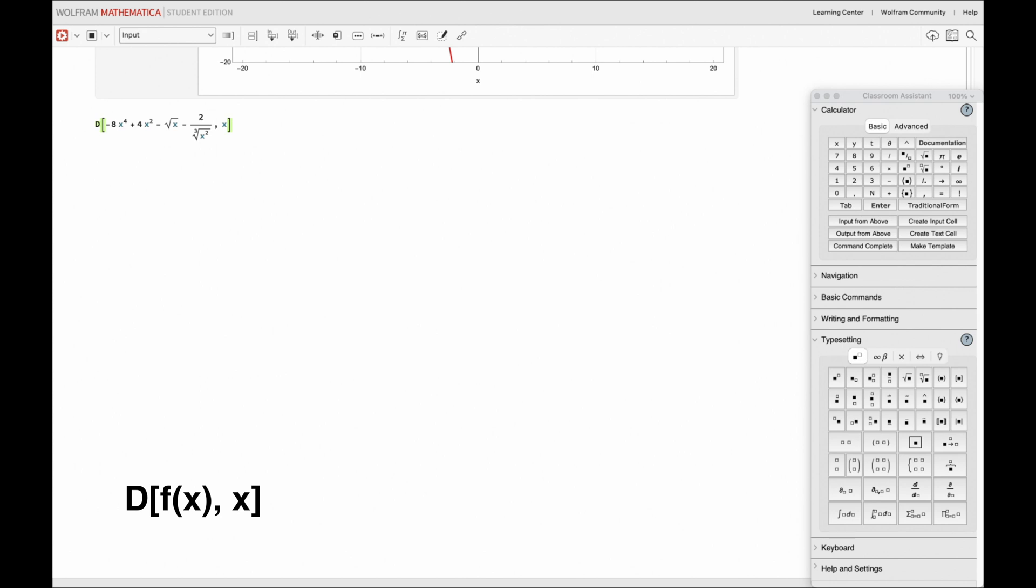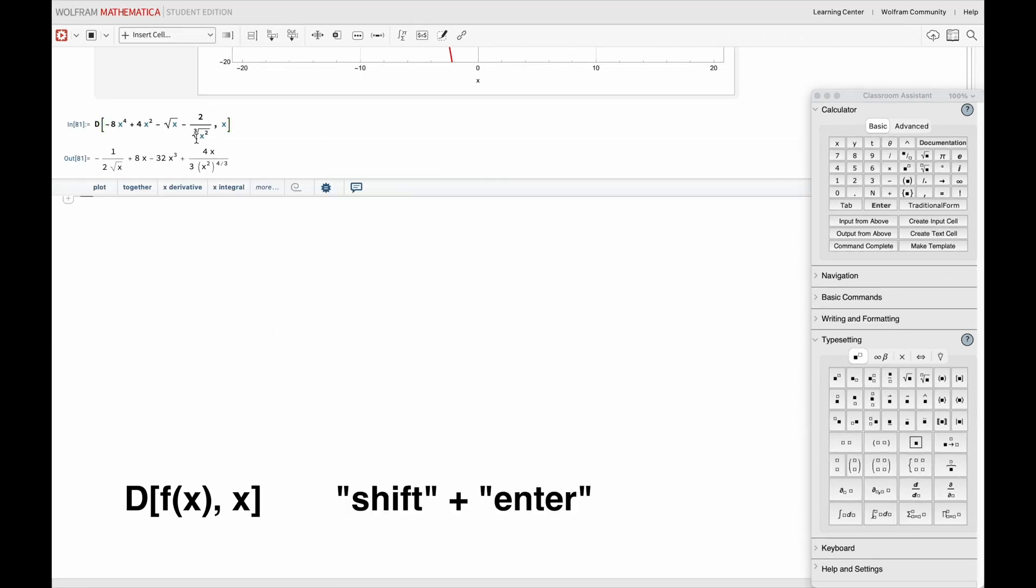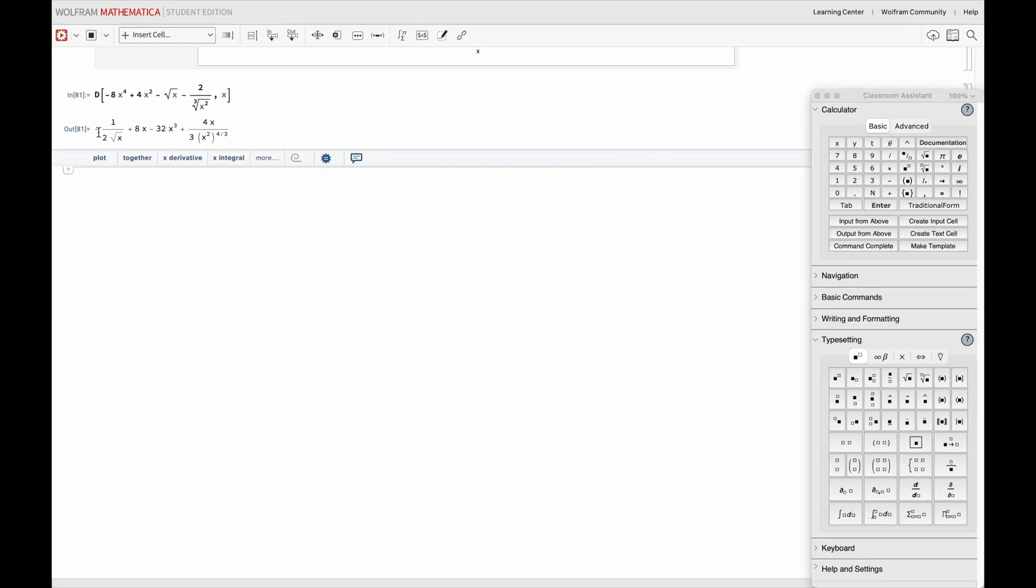To run the code, click shift plus enter right at the end. And there we have it. Mathematica cooked this derivative in under one second, exactly as our power rule predicted. It's like magic, but it's actually mathematics.